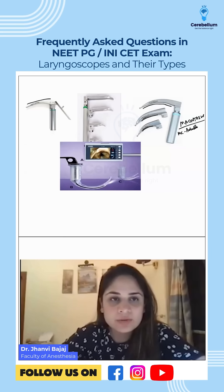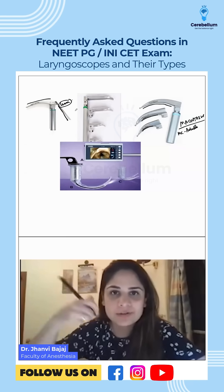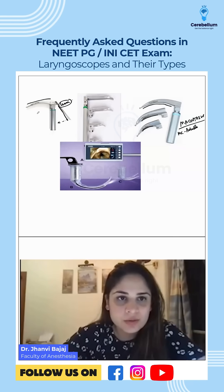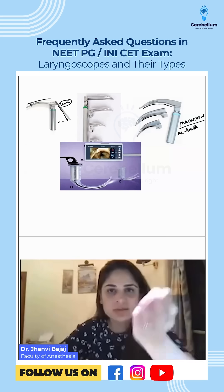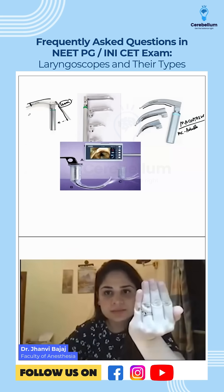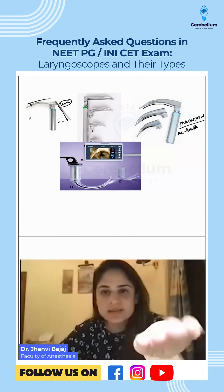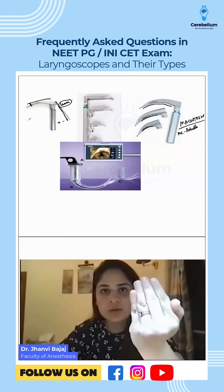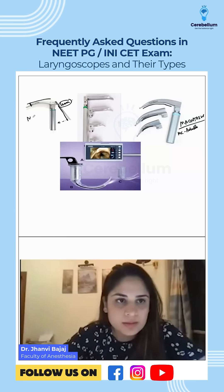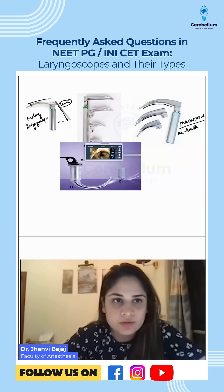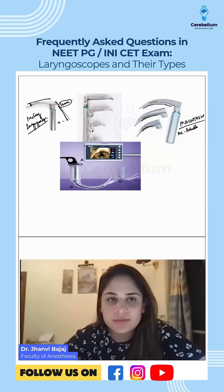If you have a curved blade with a lever attached over here — this is called a lever — when you push this lever down, this part is flexible and moves up. When it moves up like this, it also lifts the epiglottis along with it. So this one is called the McCoy laryngoscope.